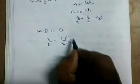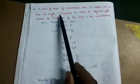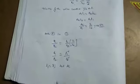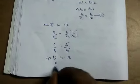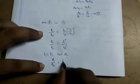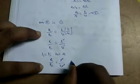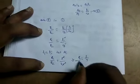Substituting the second equation into the first: R1 divided by R2 equals l1 divided by l2 times l1 divided by l2, which equals l1 squared divided by l2 squared. Since l1 equals l and l2 equals 2l (length doubled), R1 by R2 equals l² divided by 4l², which gives 1 by 4.